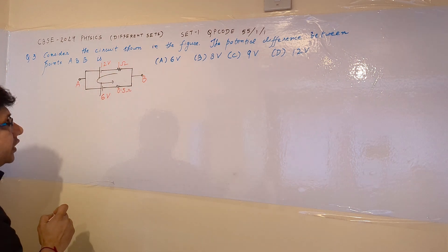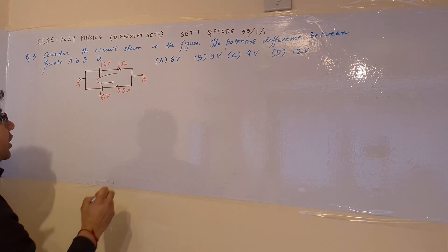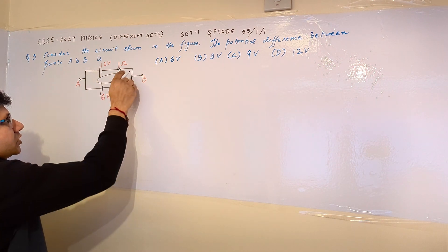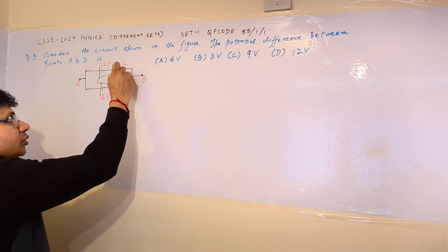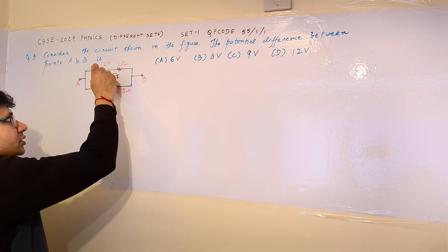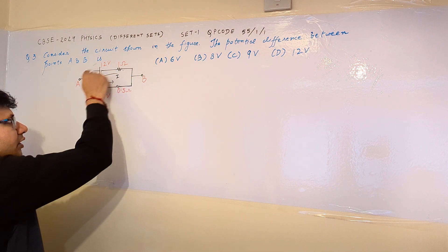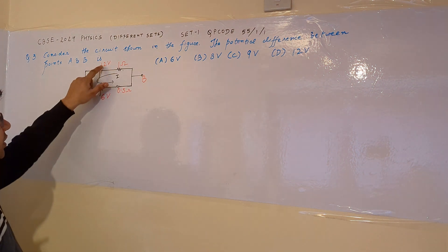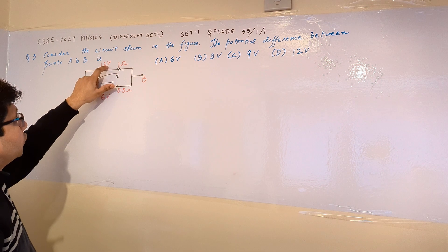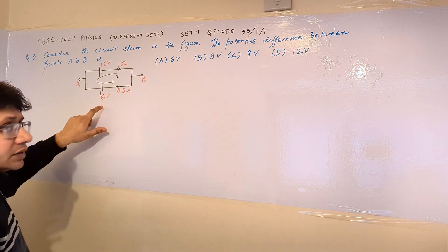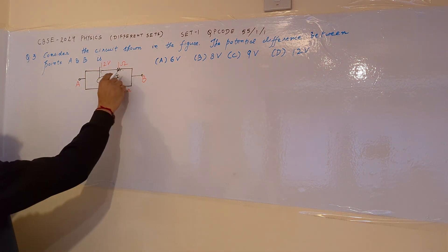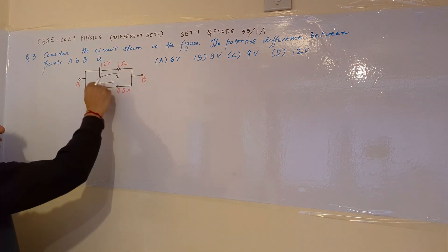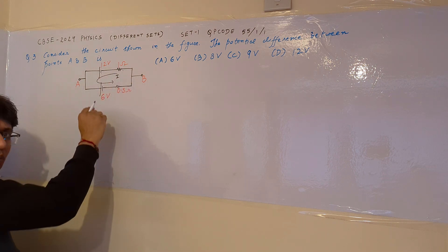The current is common in this particular loop. This battery is having a higher voltage of 12 volts, and 12 is greater than 6. It means we can certainly say that the direction of the current is the anti-clockwise direction.